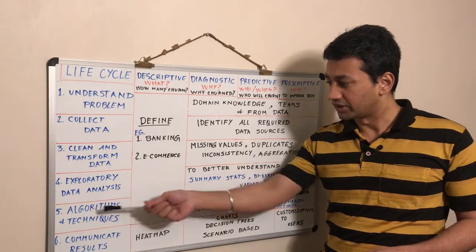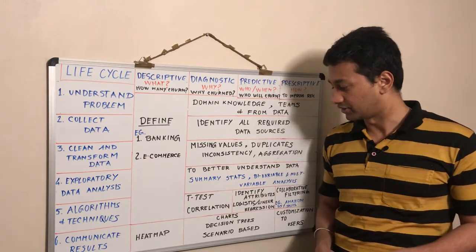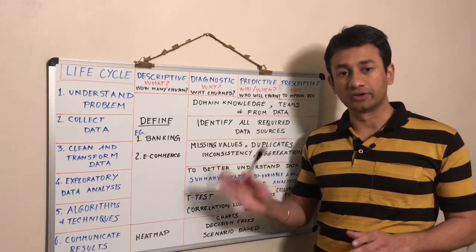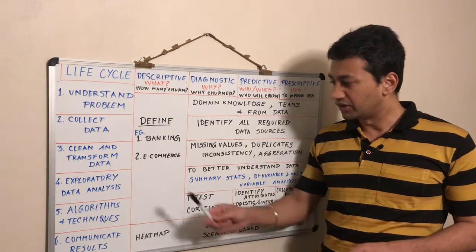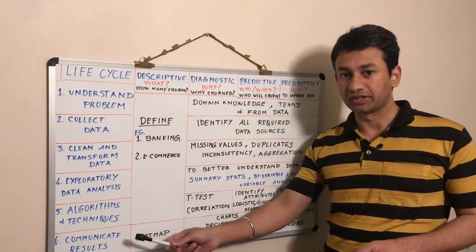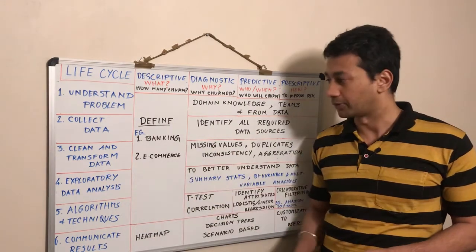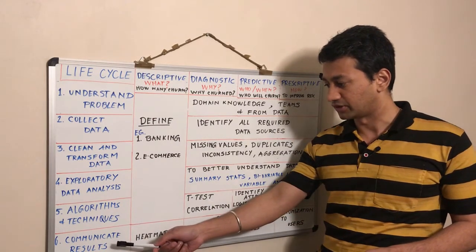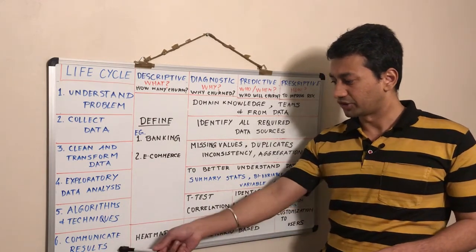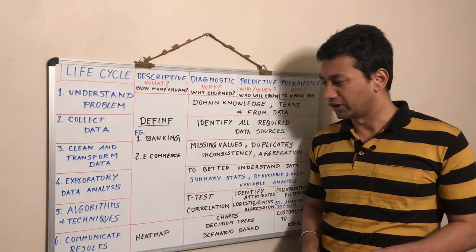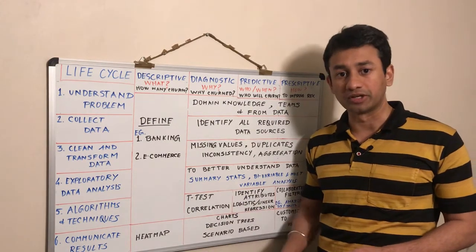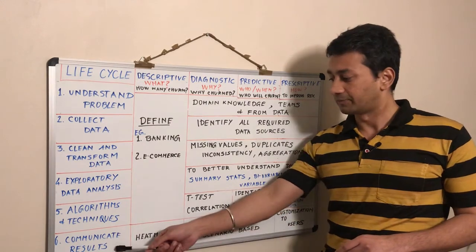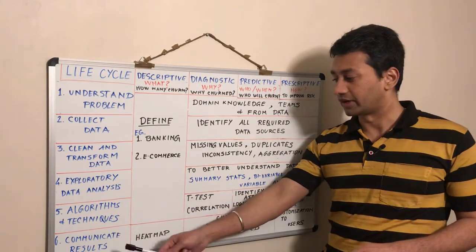The fifth one is algorithms and techniques. Depending upon the problem that we are going to solve, we will be using the right algorithms as well as techniques in order to solve the problem. And the final step is communicating the results. This is the most important aspect where we are going to use the right medium of communication in order to translate all the insights to the business as well as all the relevant stakeholders.